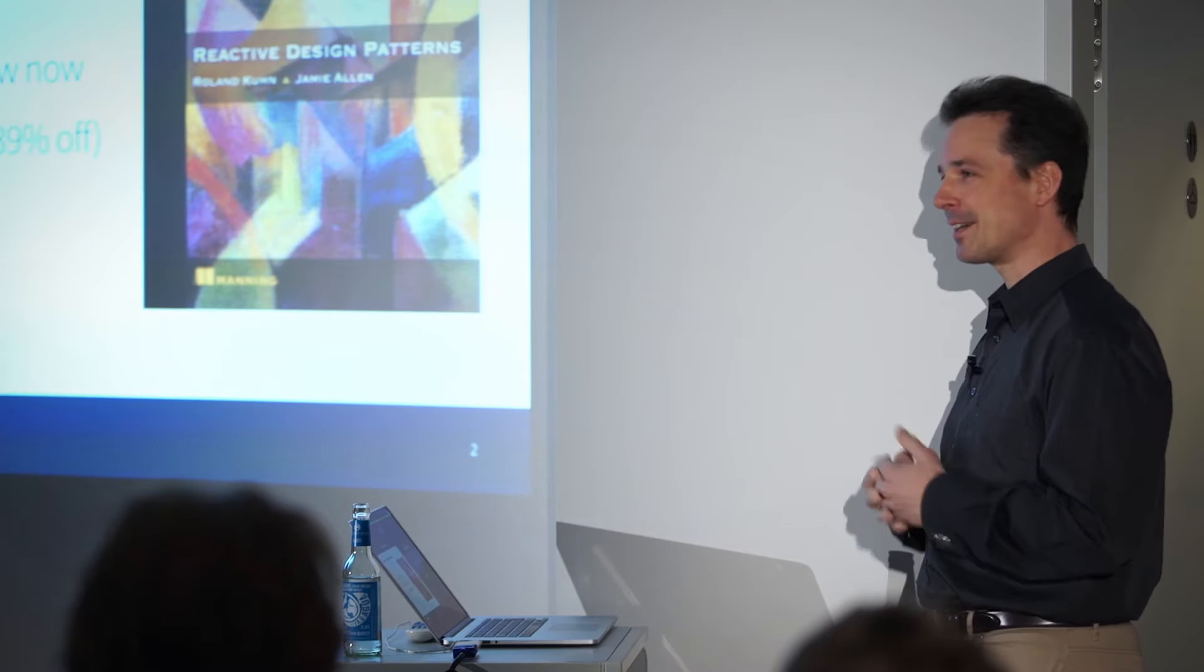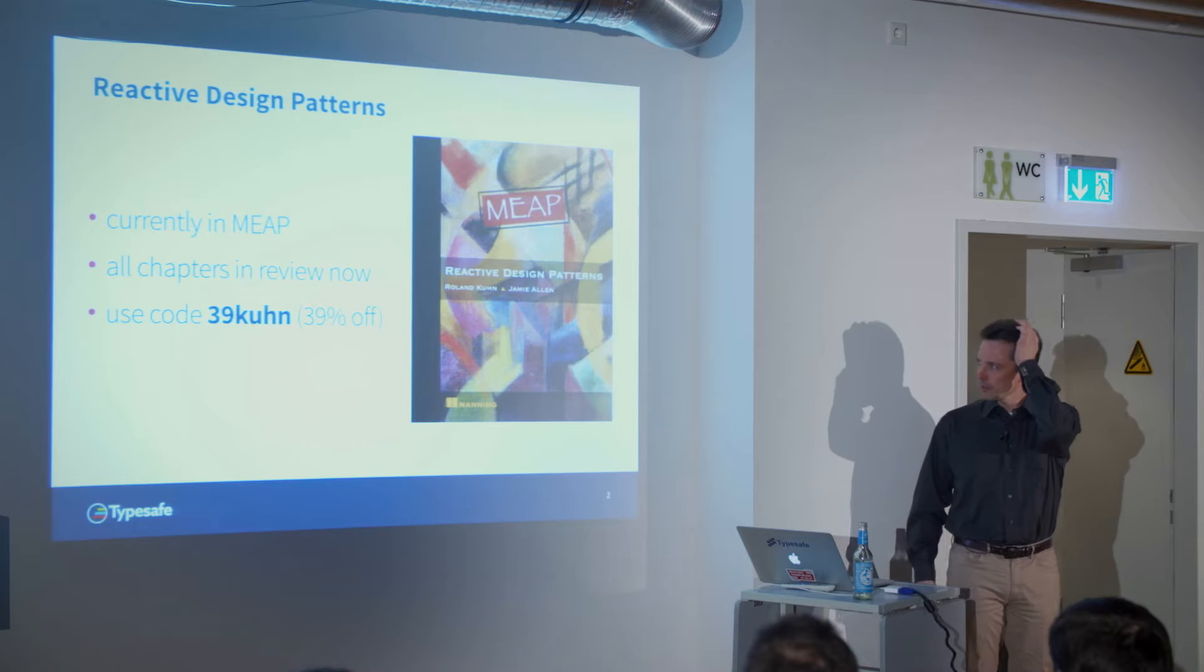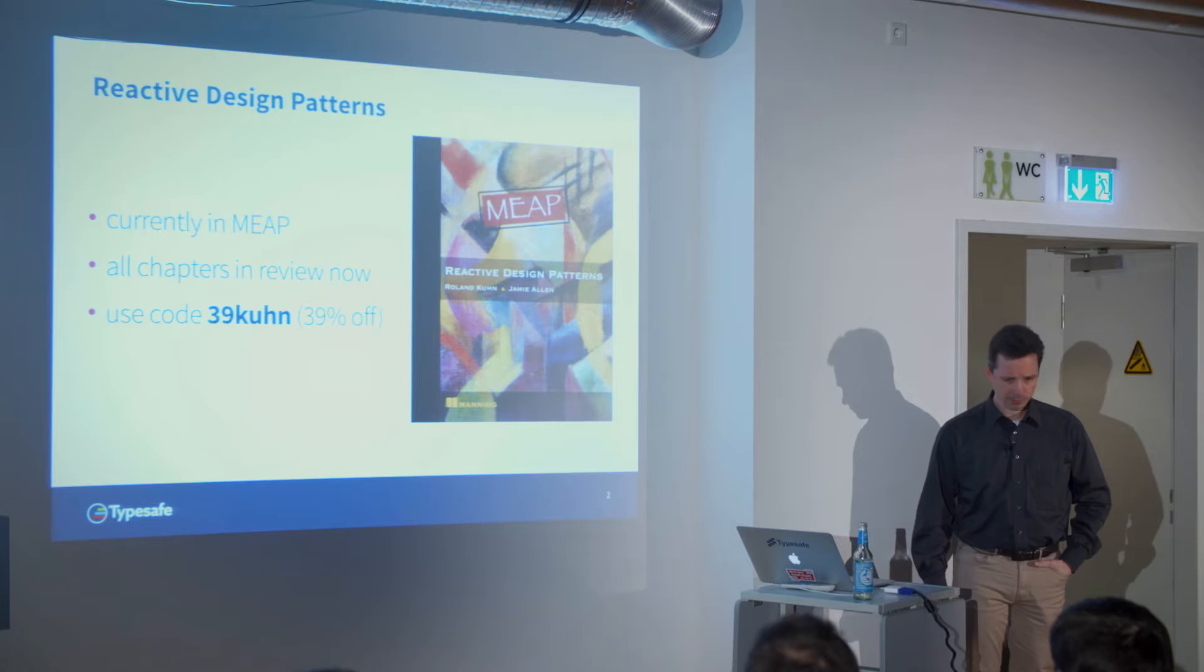All chapters are basically written out for final review. It will probably take another three, four months before the final version comes out but it's nearly done. It has taken like two and a half years to get to this point. There's the code 39KUHN for 39% off. I'm told there's even a better code that gives you 45% off at the TypeSafe site.